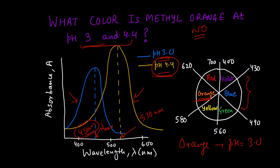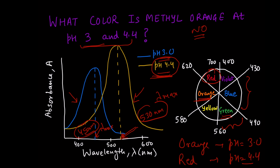At pH 4.4, the lambda max is 530 nanometers, which corresponds to the green region of the colour chart. The colour opposite to green is red, so methyl orange shows red colour at pH 4.4. I hope you understand this concept.